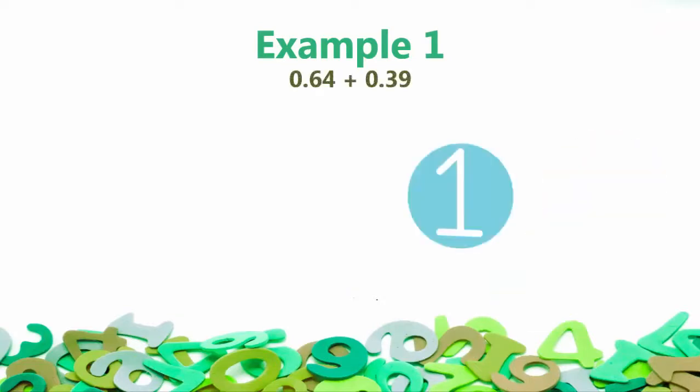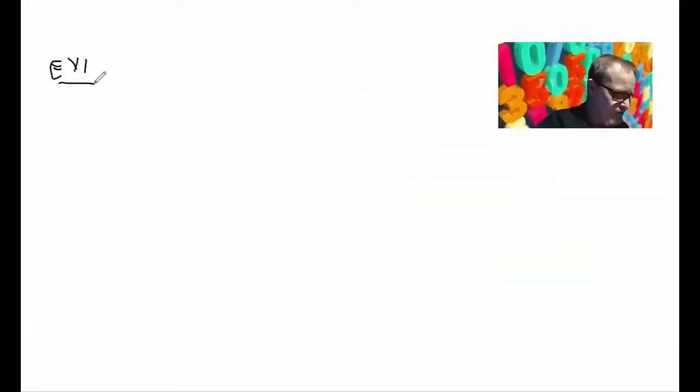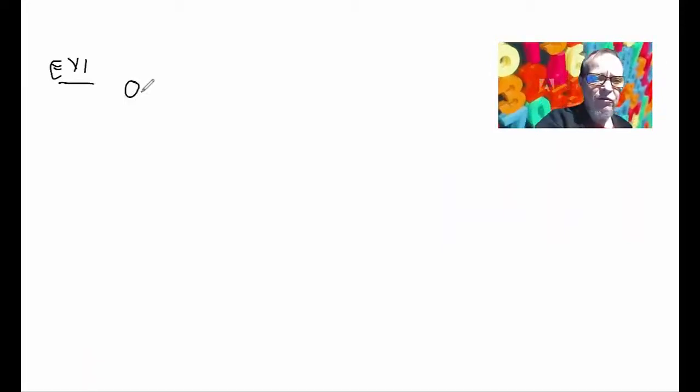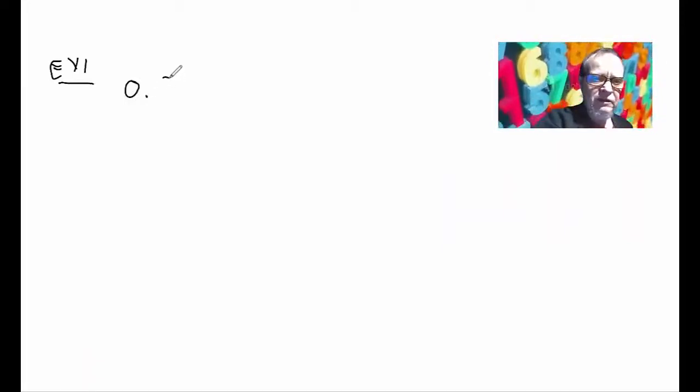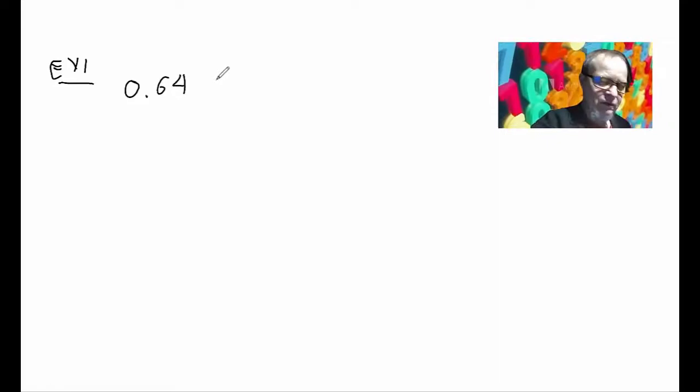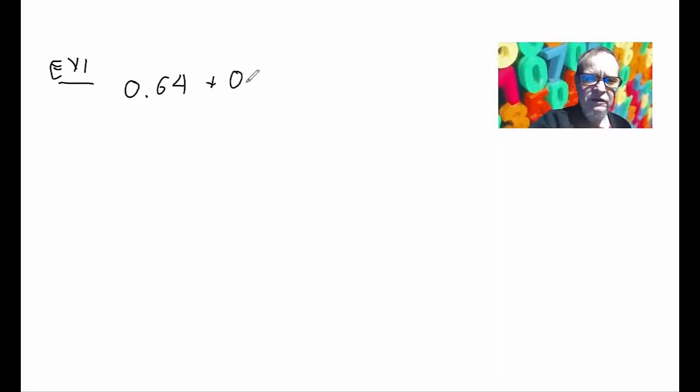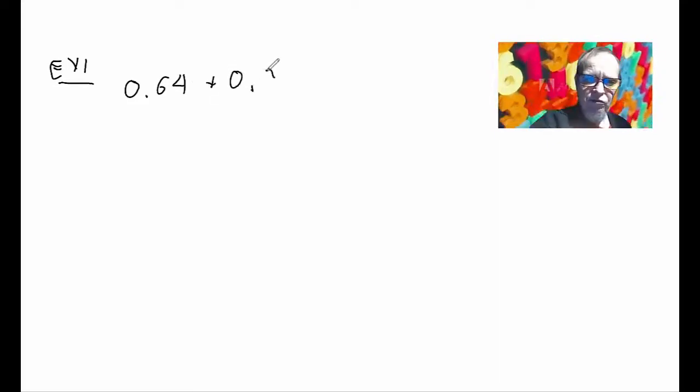let us do 0.64 plus 0.39. Let us go over to the whiteboard and work this one out in detail. In example number one, we have 0.64 plus 0.39.